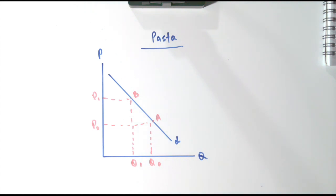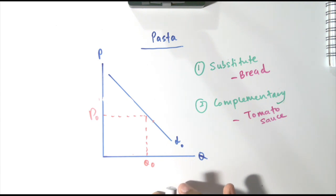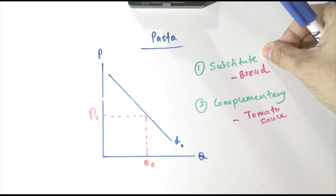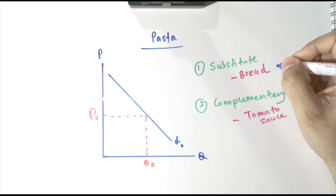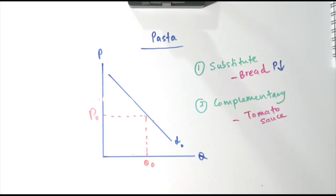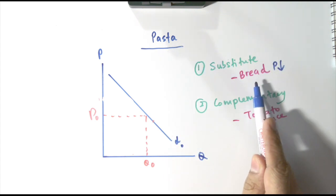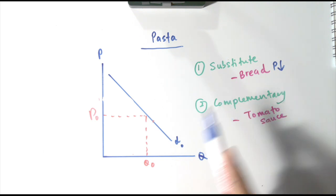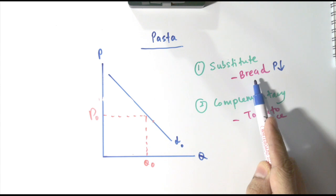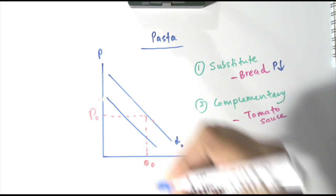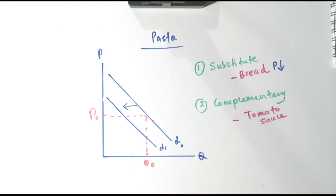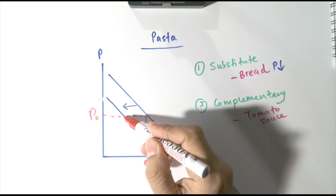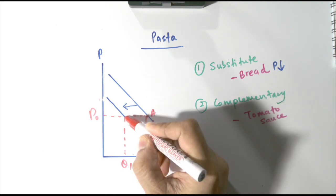The next factor is price of related products. Let's look into substitutes first. The substitute for pasta is bread. If the price of bread goes down, bread becomes cheaper relative to pasta. Consumers are going to shift their purchase from pasta to bread, consuming more bread than pasta. So the demand curve for pasta decreases from D0 to D1 — it shifts to the left. At price P0, the new quantity is Q1, moving from point A to point B.